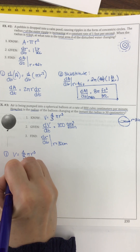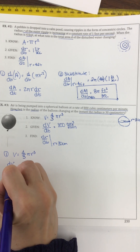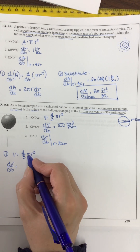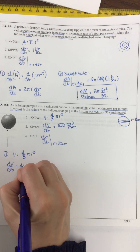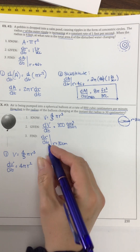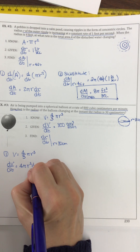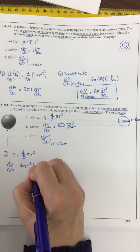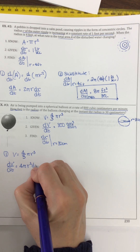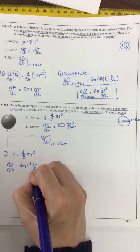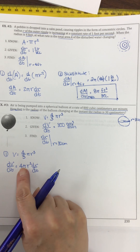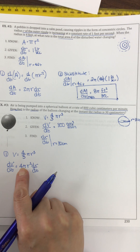The derivative would be dV/dt equals — bring the 3 down — 4 pi r squared dr/dt. Because four-thirds times 3 is just 4 pi.